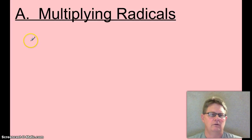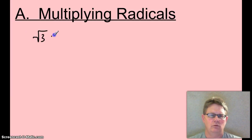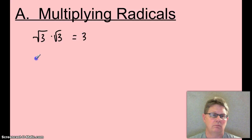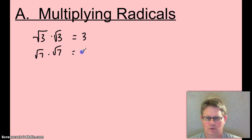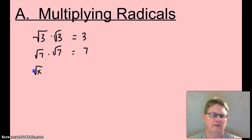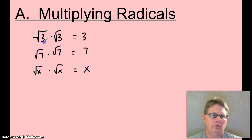Multiplying radicals — let's get to the nitty gritty first. Let's start with root 3 times root 3 — that will simply be 3. Root 7 times root 7 — that will be 7. Root x times root x — that will be x. Any square root times itself equals the number inside.